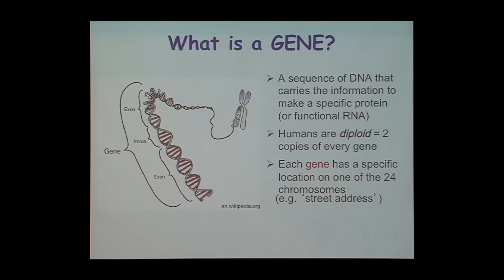When a gene is composed of exons and introns, the actual protein coding region is all of the exons. When this is transcribed into RNA and then spliced down so that all the exons come together, those exons together actually encode a protein.